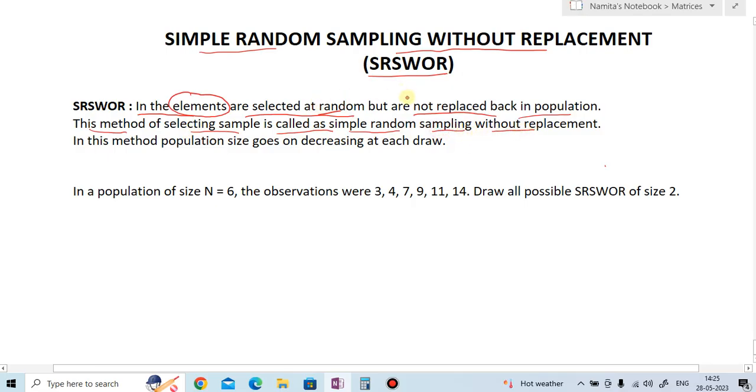So simple random sampling without replacement means the elements which are selected from the population are selected at random basis, and the selected elements are not replaced or written back in the population size. So this method of selecting the sample is called as simple random sampling without replacement. So in this method, the population size goes on decreasing at each draw.